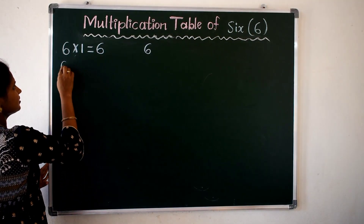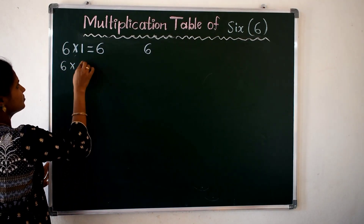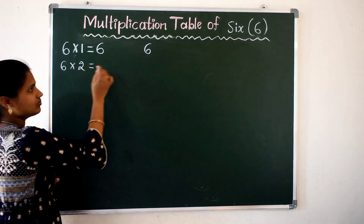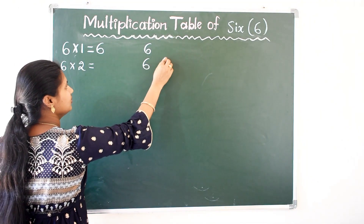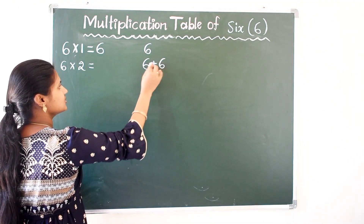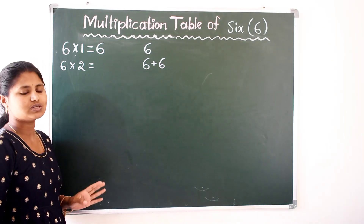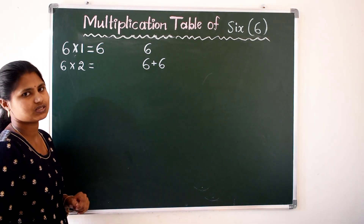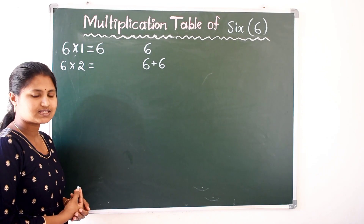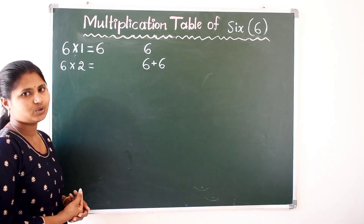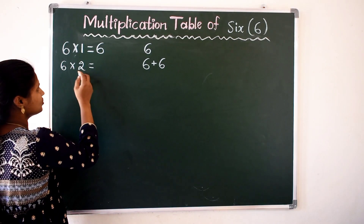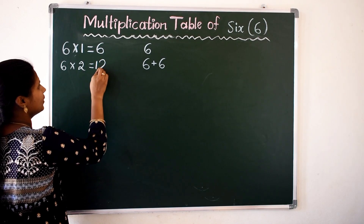6 2s are — 6 two times. So 6 two times are there, so 6 plus 6. How much? 6 plus 6 is 12. So 6 2s are 12.